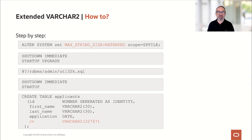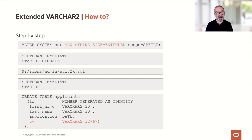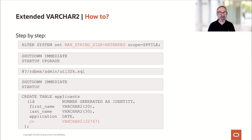Now I can create objects, like this table called APPLICANTS, where the last column called CV is a VARCHAR2 of 32,767 bytes, which is the maximum for this data type. Looks great and is extremely helpful, no doubt — but there are a few things to mention and take care of.